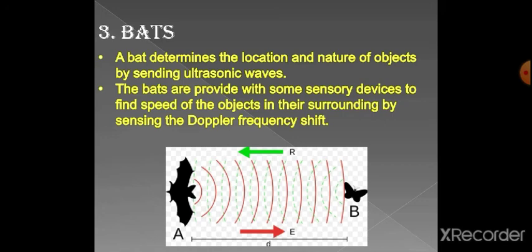We can see from this diagram that bats send the emergent radiation which strikes the object, then the reflected radiation is observed by the bat. So bats determine the speed and location of the object.